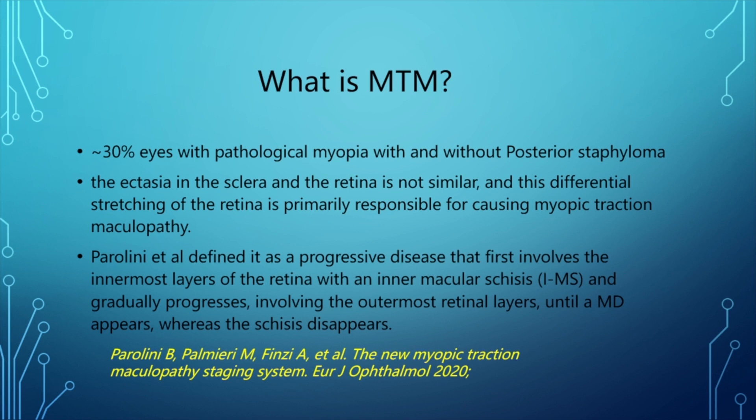Paralini et al. has defined it as a progressive disease that involves the innermost layers of the retina with an inner macular schisis, and gradually progresses involving the outermost retinal layers until a macular detachment occurs, whereas the schisis disappears.